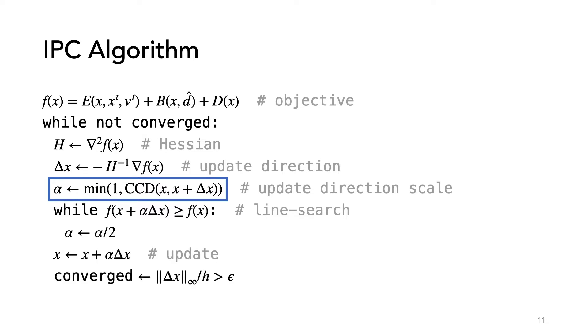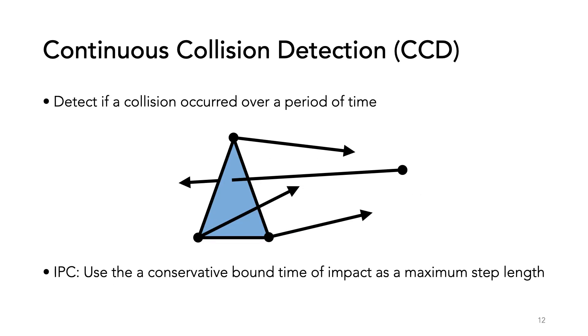Let's take a look at what this CCD function entails. The goal of CCD is to detect if a collision occurs over a period of time. For example, here a moving point and triangle are colliding even if the final configuration is not intersecting. As we saw, IPC uses a conservative bound on the time of impact as a maximum step length.